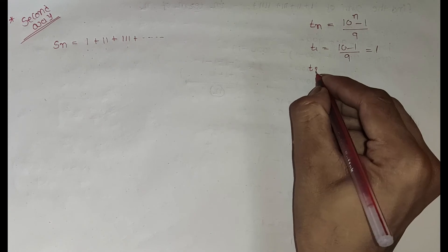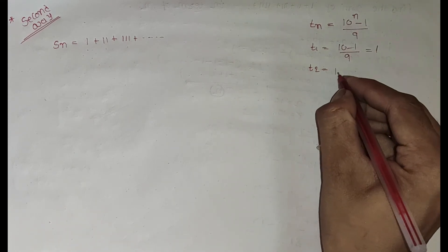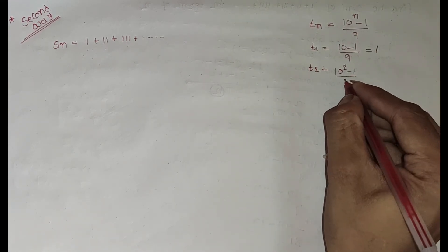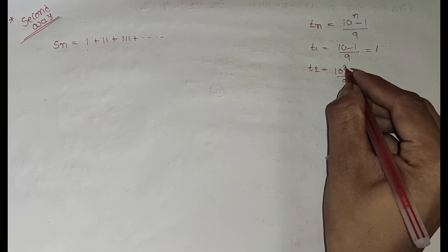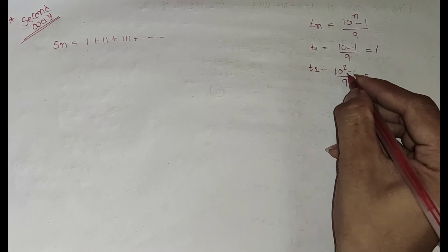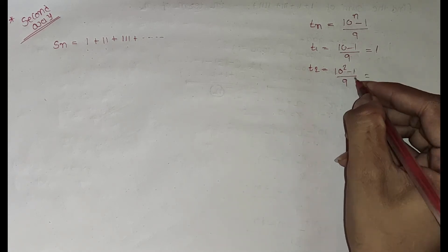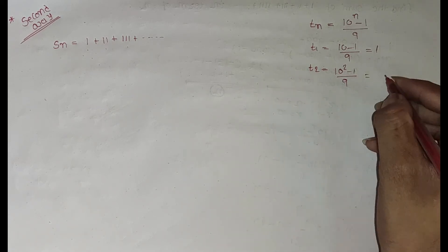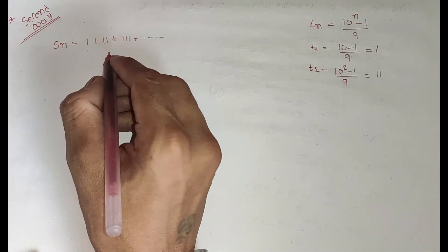T2, put n equal to 2: (10 squared minus 1) divided by 9. 10 squared is 100, so 100 minus 1 is 99, and 99 divided by 9 is 11. Correct.